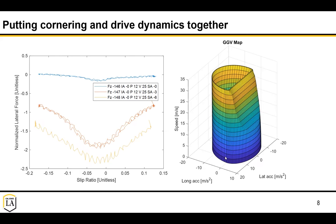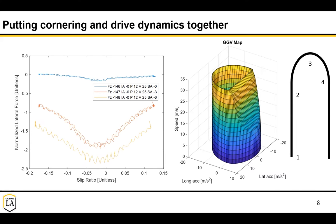Another phenomenon you might see is that the entire surface will start to taper out at higher velocities if you have an aero package that can provide downforce and more grip. Looking at how you might navigate this performance envelope in a simple scenario starting from a standstill, going into a right-hand turn, and then accelerating out of it: starting from a standstill, you're at the origin. As soon as you hit the gas pedal, you immediately come to the maximum longitudinal acceleration point and maximize forward acceleration with zero lateral acceleration.